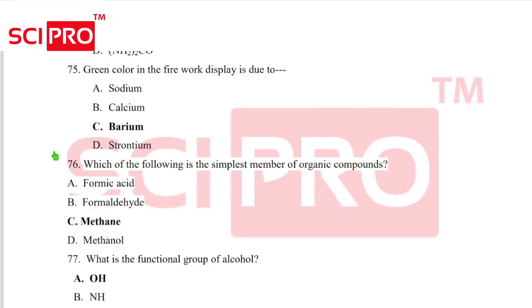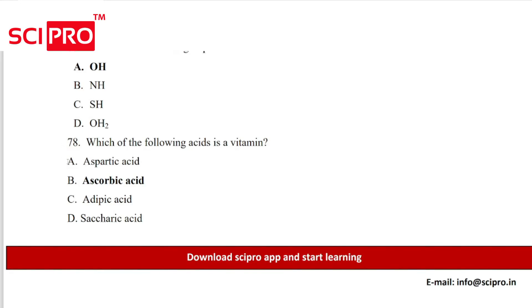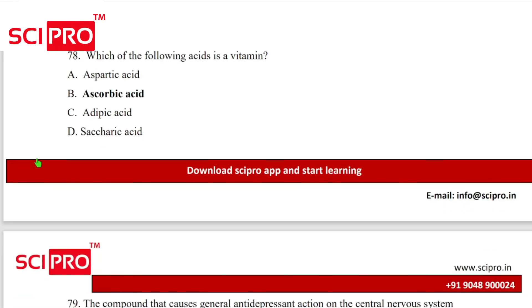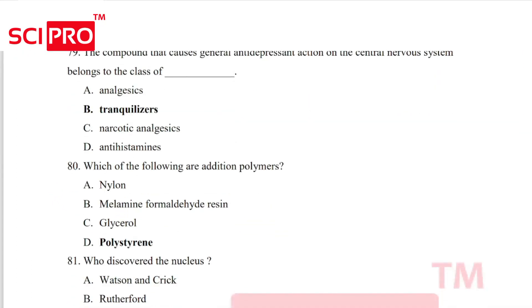Question 75, answer B. Question 76, the simplest member of organic compounds, answer methane. Question number 77, the functional group of alcohol, answer A. Question number 78, which of the following acid is a vitamin? Ascorbic acid, that is vitamin C. Question number 79, the compound that causes general antidepressant action on the central nerve system belong to the class of tranquilizers. Question number 80, which of the following are additional polymers? Polystyrene.